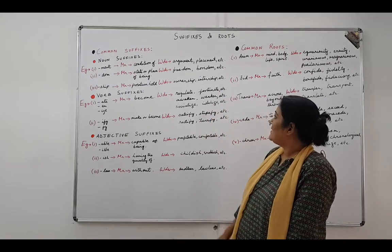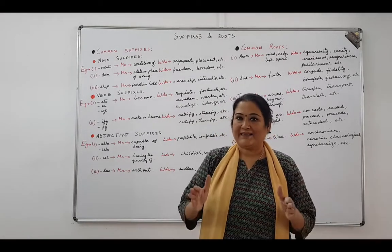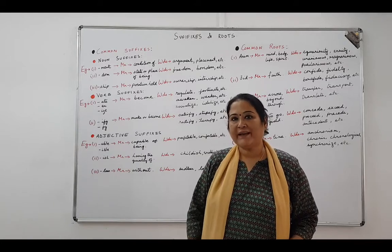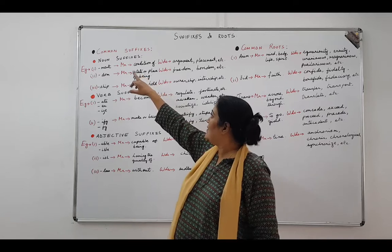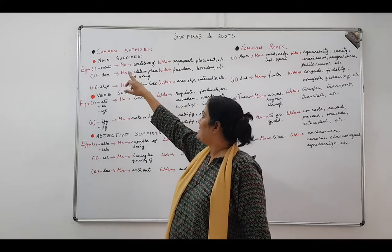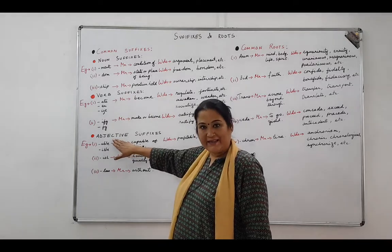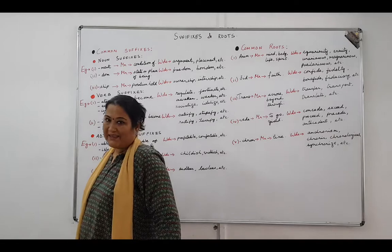So the first thing that we do is we come to suffixes. Now suffixes are affixes that are attached to the end of a root word to modify its meaning or to create new words. They can be of three kinds: noun suffix, verb suffix, or adjective suffix. Let's look at all three kinds with examples.